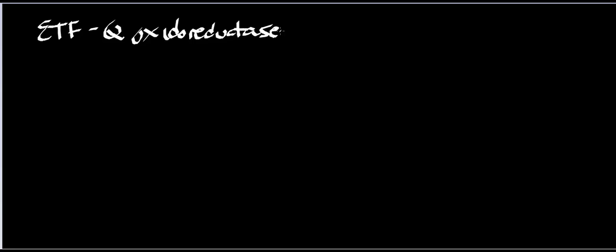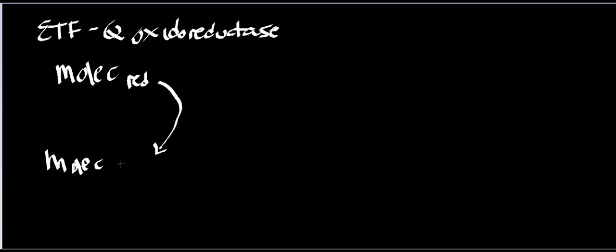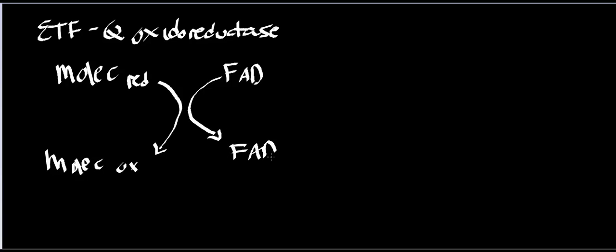I'm not going to spend a whole lot of time on this enzyme, because mechanistically the electron transfers are identical to succinate dehydrogenase. So let's say I have some generic molecule that is reduced, and I'm going to oxidize it. There are many enzymes that do this. The ultimate electron acceptor, or the oxidizing agent, is going to be FAD, and so you're going to get FADH2.